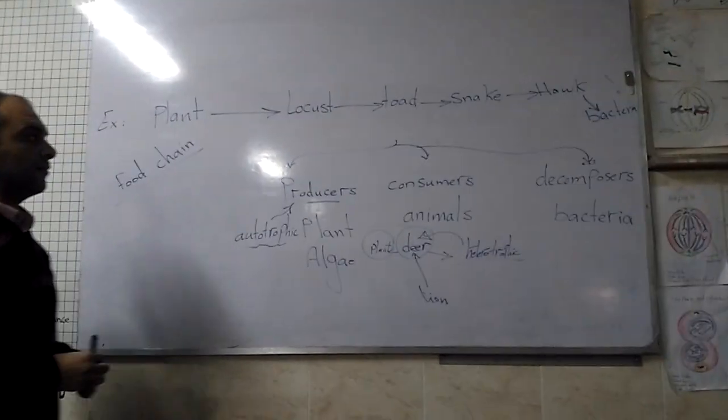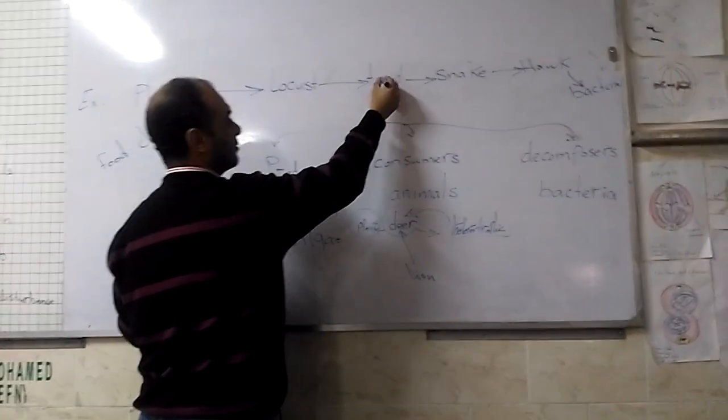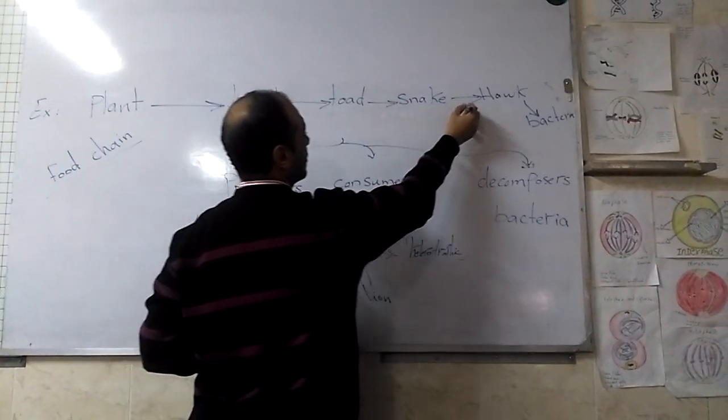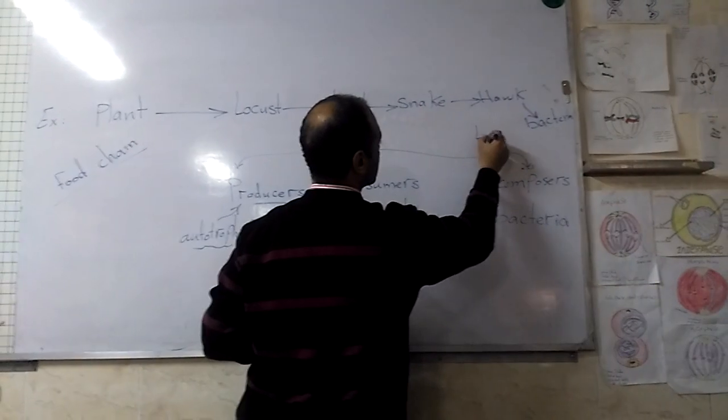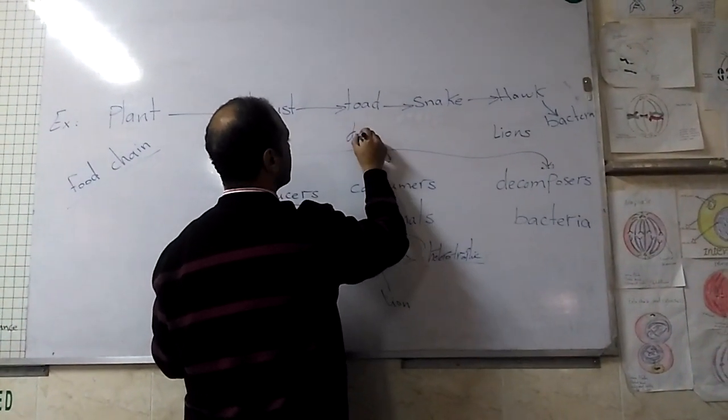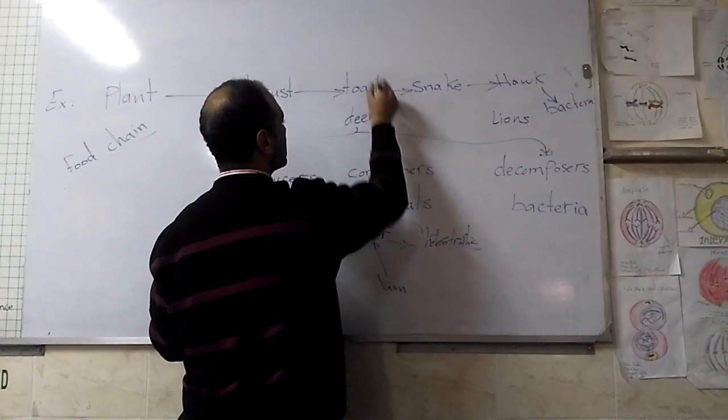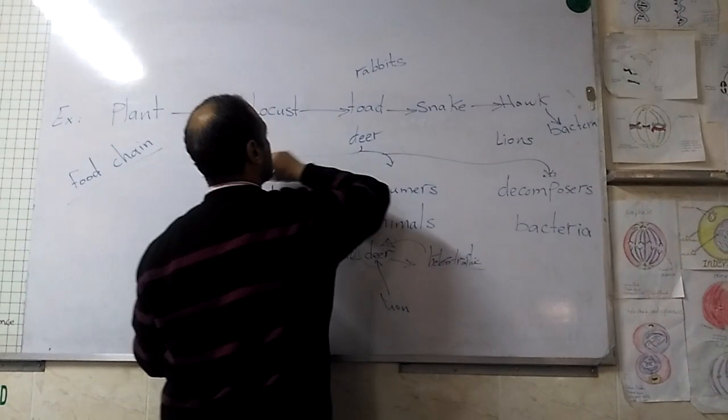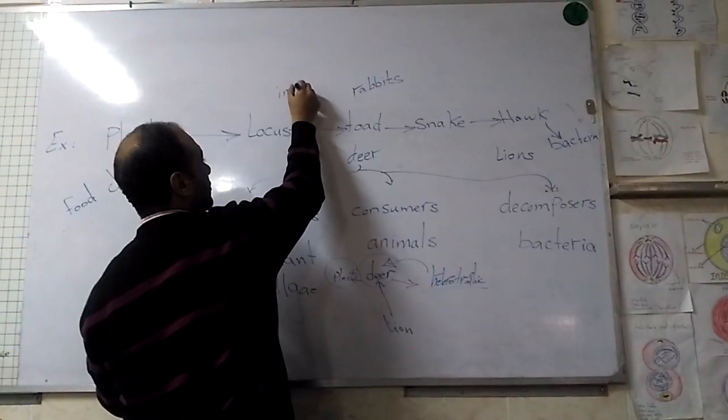If we have other living organisms like lion, deer, rabbits, and other types of insects...